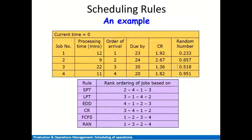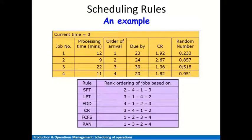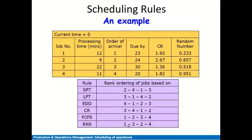For the Random Number method, we arrange jobs from lowest to highest random number. The lowest random number is 0.233, corresponding to job one — it goes first. Next is 0.51 for job three. Then 0.857 for job two. The highest is 0.951 for job four, which goes last. The Random sequence is: 1, 3, 2, 4.